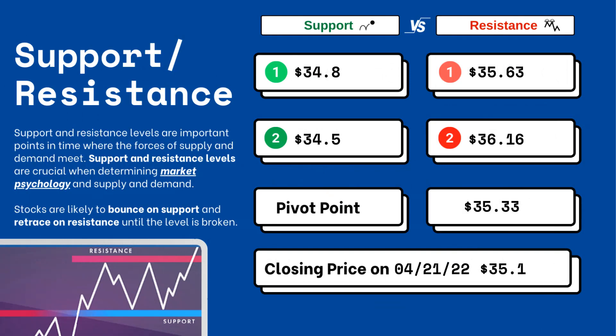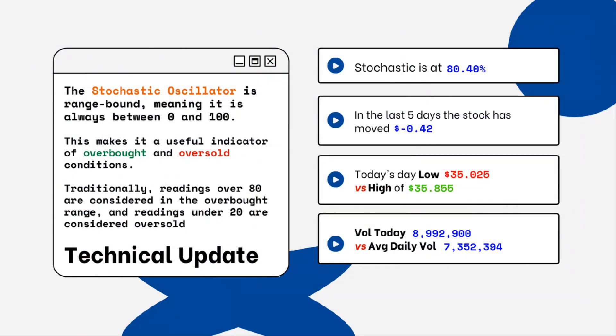On the right side you'll see three support levels and also three resistance levels. These are areas that you want to watch when looking at this particular stock. Stocks typically bounce at support levels and resist at resistance levels, meaning they'll retrace from that top level.